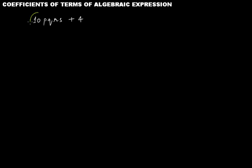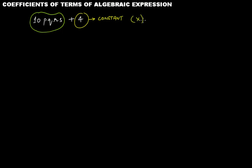In this algebraic expression, we have two terms. One is this term and another one is this one. This term is actually a constant. For constants, we do not have any coefficients. We can find coefficients only for those terms which have algebraic factors in them — which contain variables.